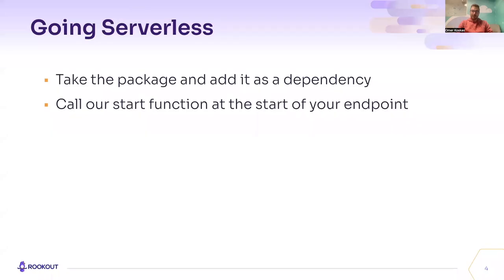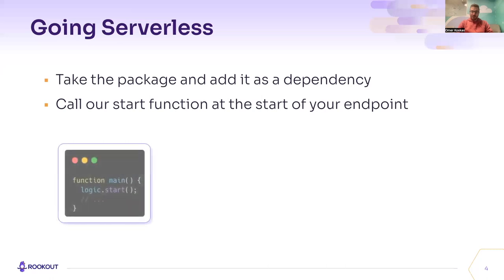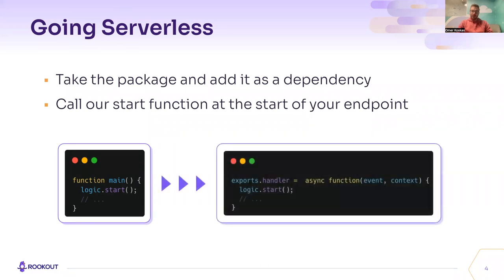So let's get to it. How do you do it? From the perspective of a package, there is not a lot to be done. Your users just add you as a dependency for their serverless handler and call you at the start of the endpoint. Let's look at a simple example. Let's say your package is called logic. Previously, your users called logic.start at the start of their main function. And to make the transition to a serverless app, all your clients had to do was call logic.start at the start of their endpoint handler.